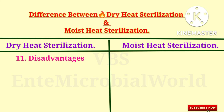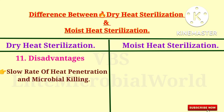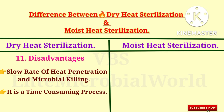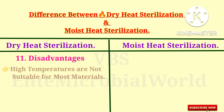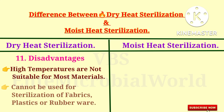Disadvantages of dry heat sterilization: Slow rate of heat penetration and microbial killing. It is a time-consuming process. High temperatures are not suitable for most materials. Cannot be used for sterilization of fabrics, plastics, or rubber ware.